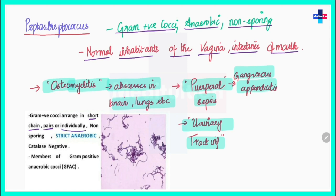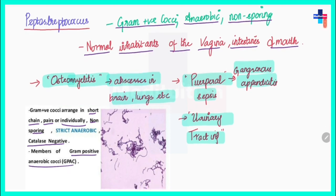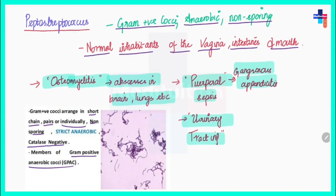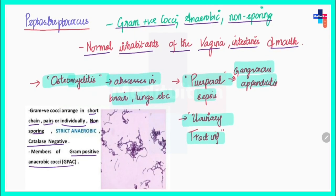Peptostreptococcus is strictly anaerobic — even 0.01% oxygen in the environment will prevent its growth. It is catalase-negative and is a member of the gram-positive anaerobic cocci. These organisms are normal inhabitants of the vagina, intestine, and mouth.